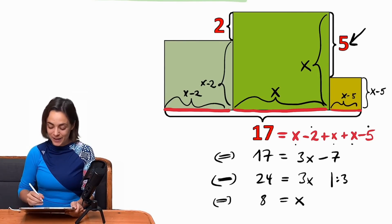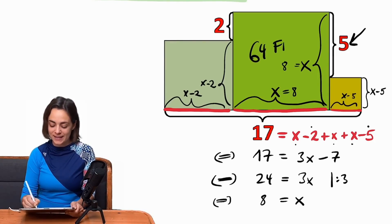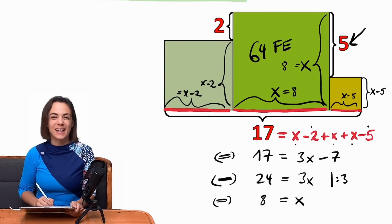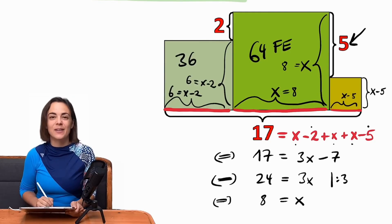And so this large square is 8 by 8, so 64 area units in size. The left square is 8 minus 2, so 6 by 6, which makes 36 area units.